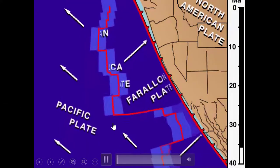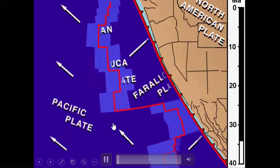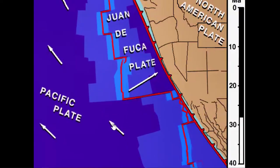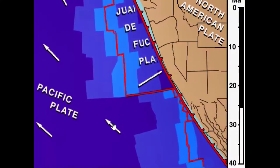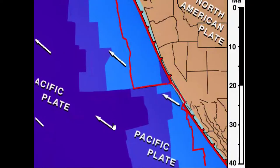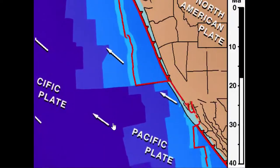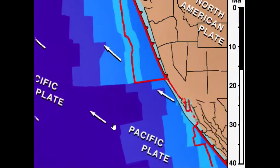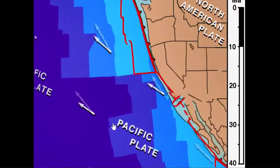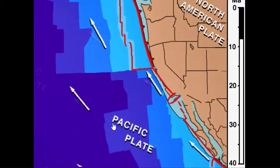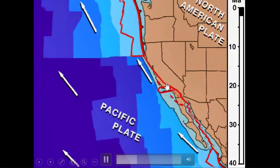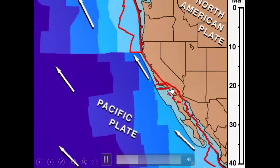In this video, we see that we had a subduction zone off of Western North America until about the point when we start to form the San Andreas. We have this lateral motion that shears the plate boundary and stretches Western North America, and the San Andreas forms in this zone here.